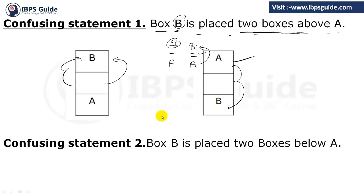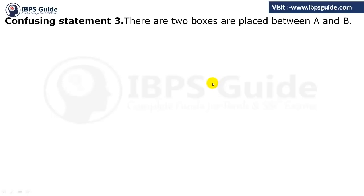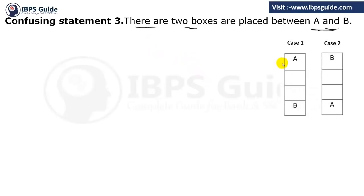These are the first two confusing statements we commonly see in box-based or floor-based puzzles. The same logic applies to floor-based puzzles. Now, the third confusing statement: there are two boxes placed between A and B. It is very simple — if they say two boxes between A and B, A can be above or below. If A is above, leaving two boxes, B is below, or B can be above with A below.